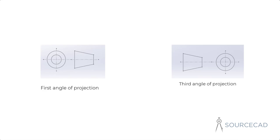Usually the first angle projection system is used in countries like India and other Asian countries, and the third angle projection system is quite dominant in the United States. Here we'll understand what these projection systems are and how they are used in our drawings.